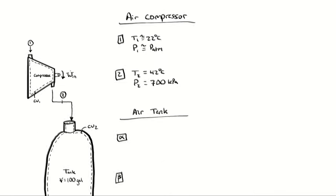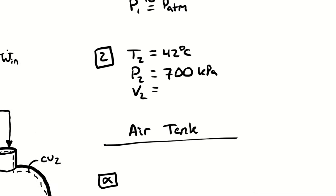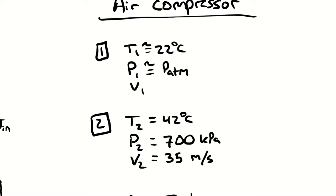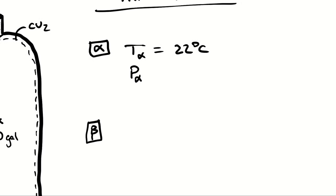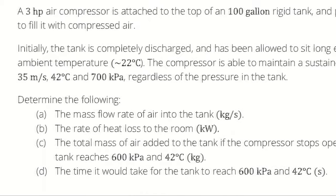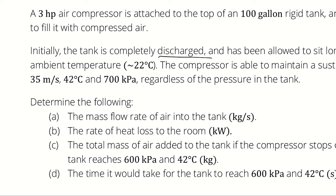The velocity at the outlet is 35 meters per second. Since the compressor is pulling air from an approximately stagnant room, V1 is close to zero — not that it actually is zero, but we assume all kinetic energy change comes from the compressor. The tank has been allowed to cool to room temperature, 22 degrees Celsius, and fully discharged means it equilibrated with the room at 1 atmosphere — not that it was evacuated entirely.